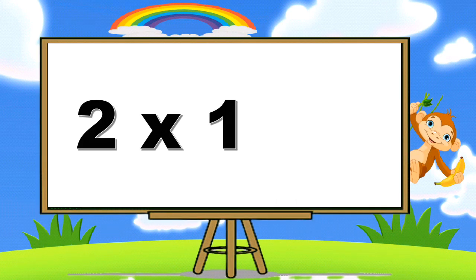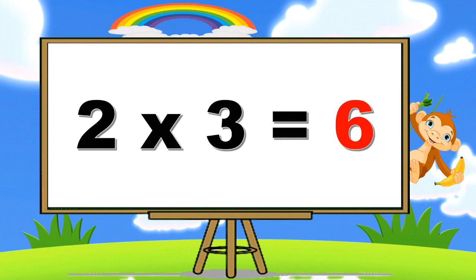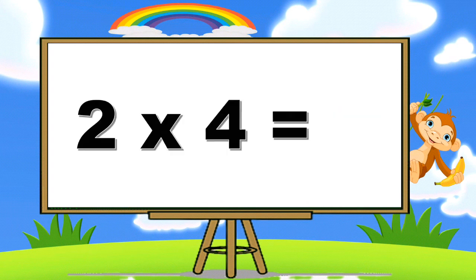Two ones are two. Two twos are four. Two threes are six. Two fours are eight.